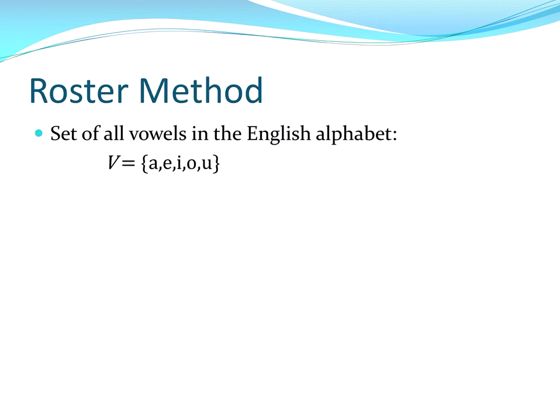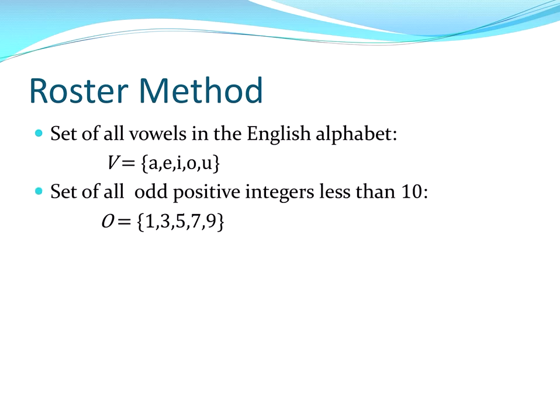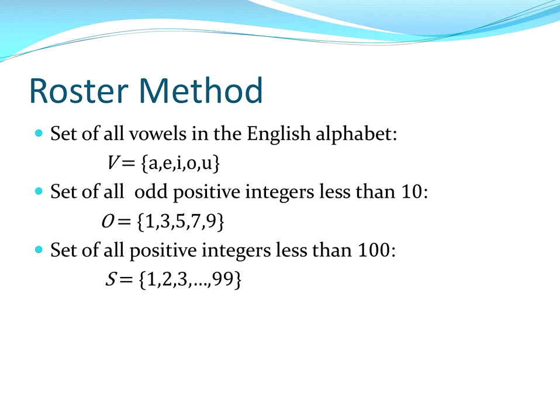Okay, here's the roster representation of all the vowels. Roster representation of odds, positive odds less than 10. Roster representation of the positive integers less than 100. No use of ellipses. Ellipses.